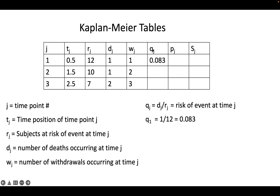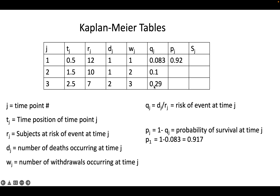The first thing we calculate is Q_J, which is the risk of the event at this time — the number of deaths over the number at risk, which is just the proportion of those who had the event among those that were eligible. So 1 over 12 comes out to 0.083. The next is the probability of survival, which is just the complement: 1 minus the probability of the event comes out to 0.92 for this one.